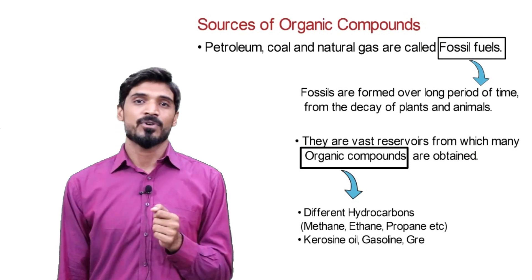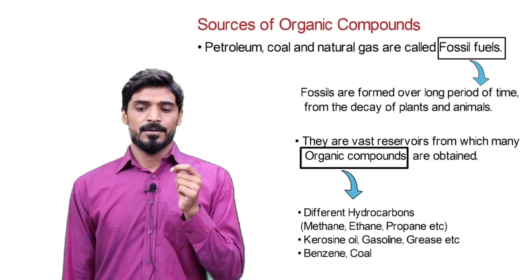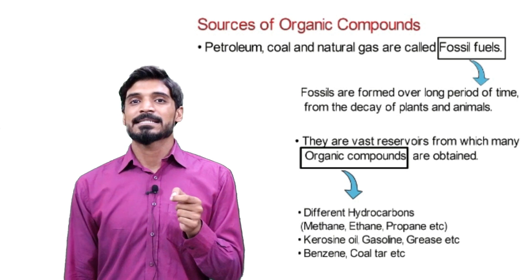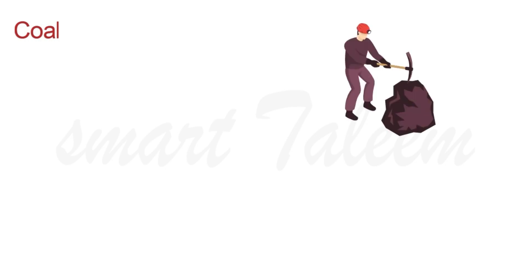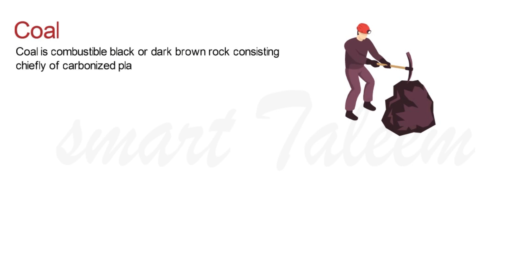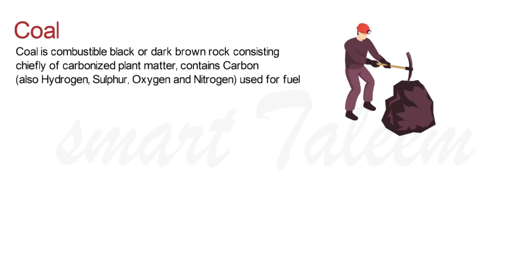We also get grease, benzene, coal tar, and coal gas. Now if we talk about coal first — coal is a combustible black or dark brown rock consisting chiefly of carbonized plant matter. It contains carbon, hydrogen, sulfur, oxygen, and nitrogen, and it is used mainly as fuel.